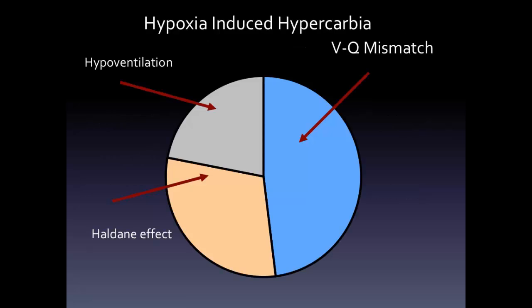And there you have the three explanations for why oxygen supplementation can cause increases in CO2 in a patient with COPD. In general, this is what we think the breakdown of contribution of each concept is: VQ mismatching contributes the majority of the effect of oxygen on hypercarbia, followed by the Haldane effect — the effect of oxygen on hemoglobin — and finally the hypoxic ventilatory drive.